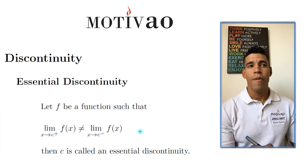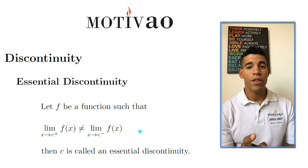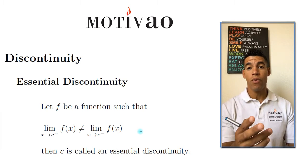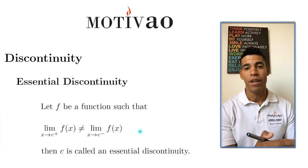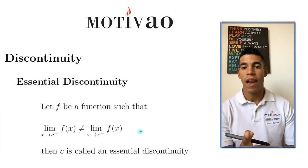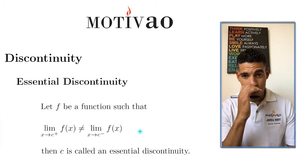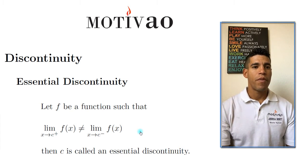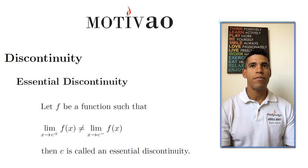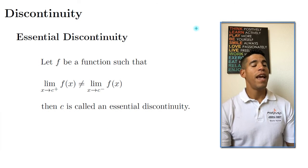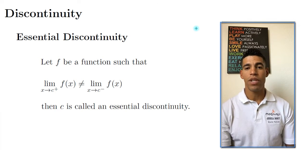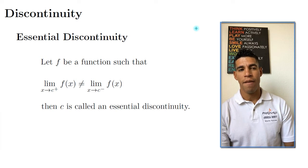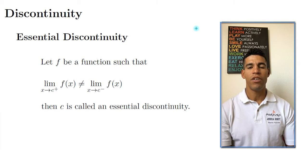Today we're going to talk about the second part of discontinuity, which is the essential discontinuity. The essential discontinuity has two different discontinuities inside it, so I'm going to talk about the first one today and the second one in the next video. The definition starts with: let f be a function such that the limit when x approaches c from the right of f(x) is not equal to the limit when x approaches c from the left of f(x). Then c is called an essential discontinuity.